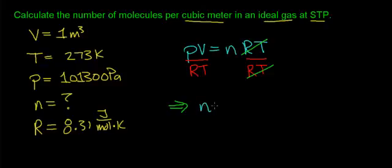And what you should see is this RT cancels out. And the equation that I end up getting is n, or the number of moles, equals pressure times volume divided by RT, the universal gas constant times the temperature.